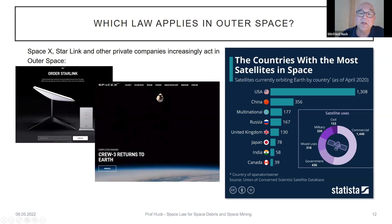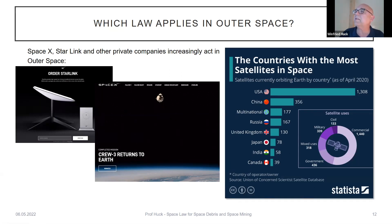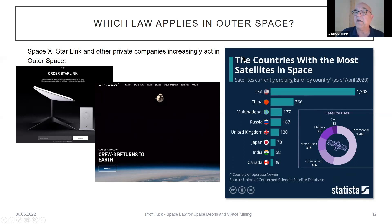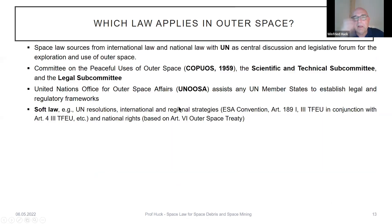Questions arise when entities like Starlink, SpaceX, or other private companies launch satellites or rockets to offer services to governmental or economic clients. Looking at countries with the most satellites in space, the US leads, followed by China, multinational organizations, Russia, the United Kingdom, Japan, India, and Canada — the states currently launching the most satellites into space.